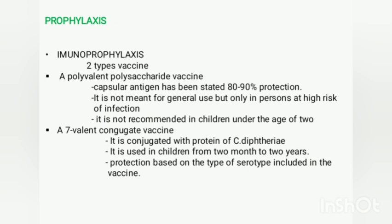For prophylaxis, immunization or vaccination is the important method to control streptococcal infection. Two types of vaccines are available: a polyvalent polysaccharide vaccine and a seven-valent conjugate vaccine. The polyvalent polysaccharide vaccine contains capsular polysaccharide antigen isolated from Streptococcus pneumoniae and provides about 80–90% protection against infection.